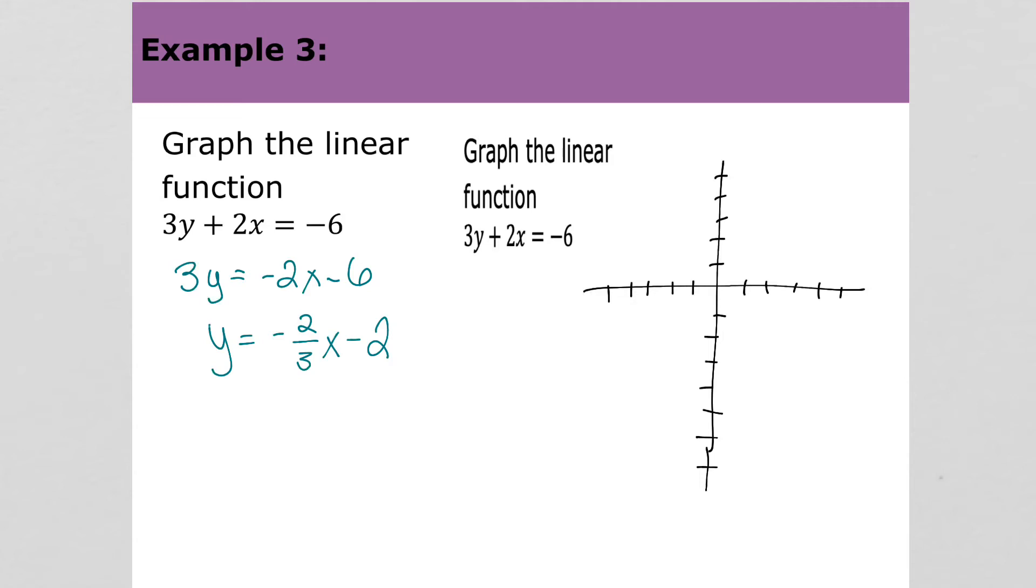What we'll do is first graph our y-intercept. That's 2 - or negative 2, excuse me. And then our slope is negative two-thirds. So what this means is that we'll rise or instead of going up, we'll go down since it's negative. We'll go down 2 and run, since the 3 is positive, right 3. We could also put the negative on the bottom and then go up 2 and left 3. Either way will work. So I'm going to go down 2 and right 3. And so this is the graph of my line.